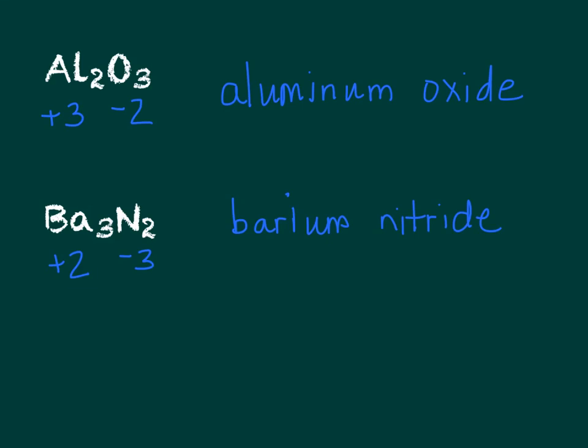So when we're dealing with the main group elements on the periodic table, even if we have parentheses somewhere, the numbers don't matter. We're simply naming the ions that make up the ionic compound.